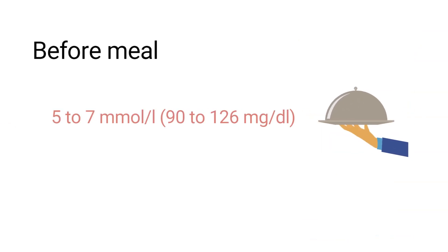Before each meal, blood glucose levels should be 5 to 7 millimoles per liter or 90 to 126 milligrams per deciliter.